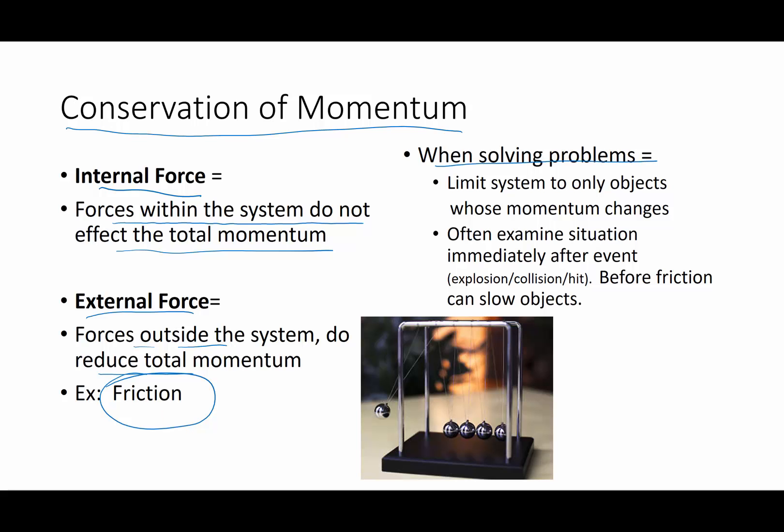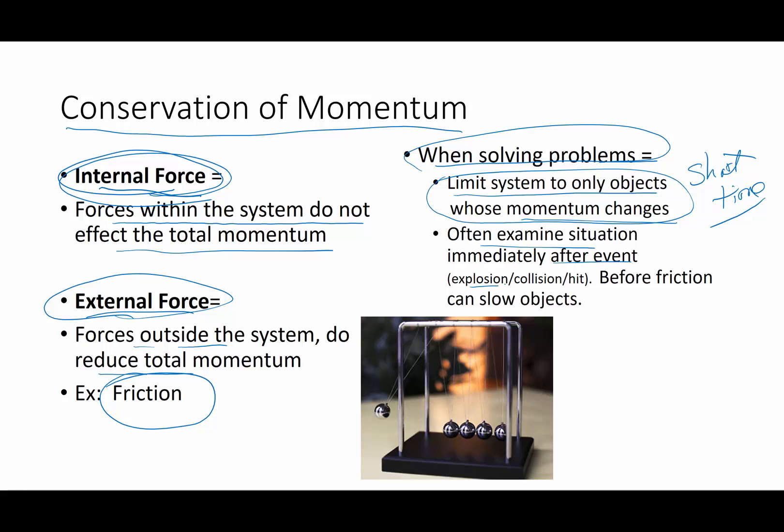So what does that mean for you and me? It means that when we're solving problems, we have to pick what we're going to put into the system, what we're going to call internal, and what we're going to call external. It sounds more complicated than it actually is. If we limit our system, the things we're doing math about, to only two objects whose momentum changes seriously in a very short period of time, then we are probably doing a good job of picking things inside the system. The other way is we examine a system immediately after the explosion, the collision, the hit. We don't give friction time to slow objects down.